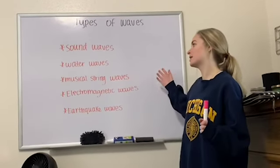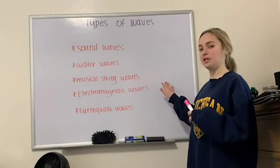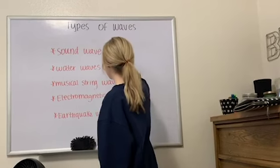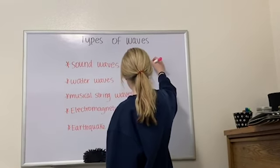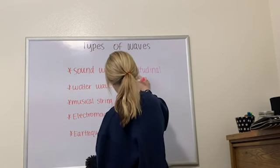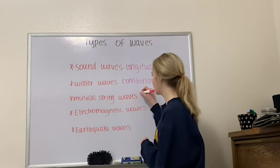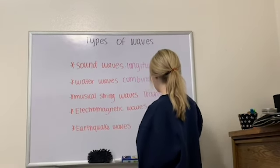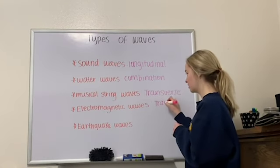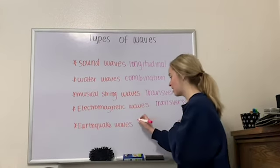Now a guessing game: pause and determine whether each wave type is transverse, longitudinal, or a combination of both. A sound wave is strictly longitudinal. A water wave is a combination of both. Musical string instruments produce strictly transverse waves. Electromagnetic waves are also strictly transverse. Earthquake waves, like water waves, are a combination of both.